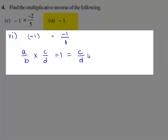This is equal to c by d times a by b. Therefore, c by d is called the multiplicative inverse of a by b and a by b is called the multiplicative inverse of c by d.